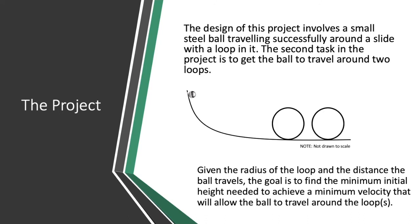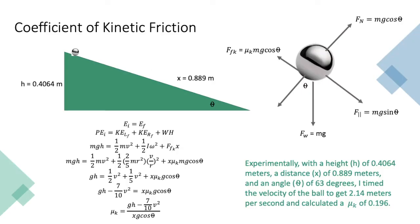Given the radius of the loop and the distance that the ball travels, the goal was to find the minimum initial height needed to achieve a minimum velocity so that the ball could travel around the loops. First, I found the coefficient of kinetic friction using conservation of energy and derived a formula for μk. I tested it experimentally using a height of 0.4064 meters, a distance of 0.889 meters, and an angle of 63 degrees. I timed the velocity of the ball and got 2.14 meters per second, which gave me a μk of 0.196.